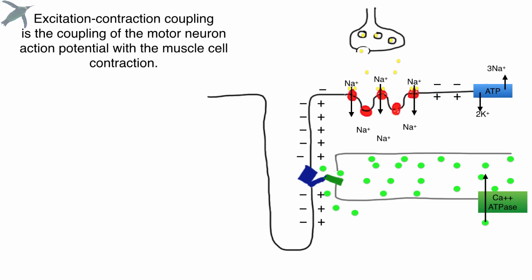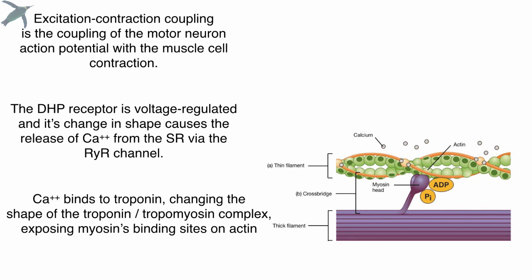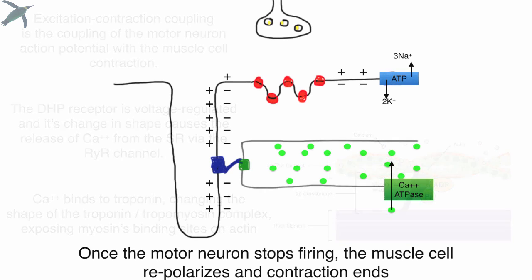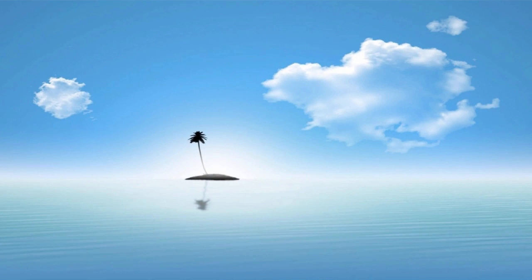Okay, so here's what we've seen. Excitation-contraction coupling couples motor neuron action potential with muscle cell depolarization and subsequent contraction. This really happens because that DHP receptor is voltage-regulated, and when it changes shape, it pulls across the cytoplasm over to the SR and pulls that ryanodine receptor open, and that allows calcium to be released from the SR. Once that happens, calcium binds to troponin, which changes the shape of the troponin-tropomyosin complex, and that is what allows myosin to bind to actin. Once the motor neuron stops firing, of course, the muscle cell repolarizes. Everything goes back to rest, and it's all over, as is this video.